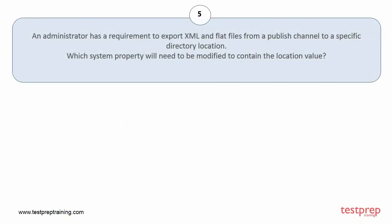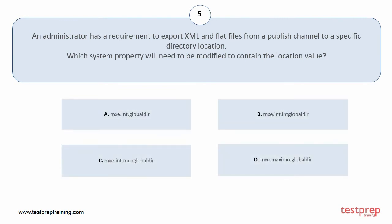Question number 5. An administrator has a requirement to export XML and flat files from a published channel to a specific directory location. Which system property will need to be modified to contain the location value? The correct answer is option A.